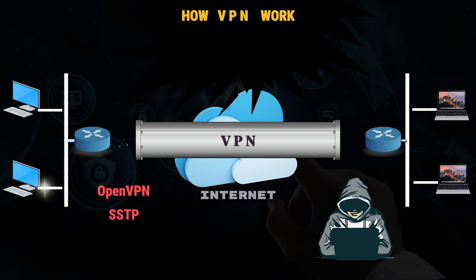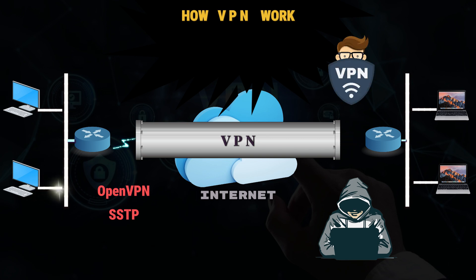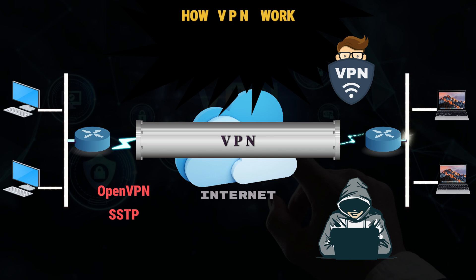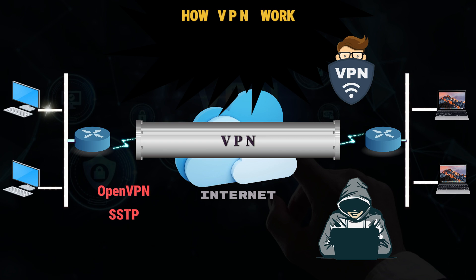By using a VPN tunnel, a user's device will connect to another network, hiding its IP address and encrypting the data. This is what will hide private information from attackers or others hoping to gain access to an individual's activities. The tunnel will connect a user's device to an exit node in another distant location, which makes it seem like the user is in another location.